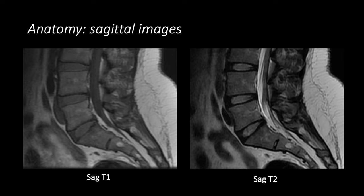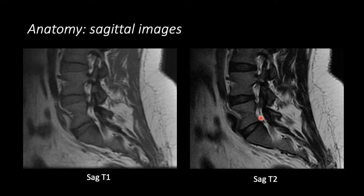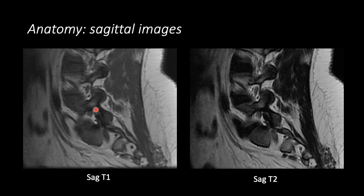Looking at the anatomy on the sagittal images, we're starting at a mid-sagittal section, and we can see the vertebral body. This is L5. This is S1. We can see the intervertebral disc and the epidural fat surrounding the thecal sac on this T1-weighted image. On the T2-weighted image, you can actually see the nerve roots, and as we move further laterally, we end up inside the neural foramen, where we can see the exiting nerve root as well as some small vessels in the foramen.